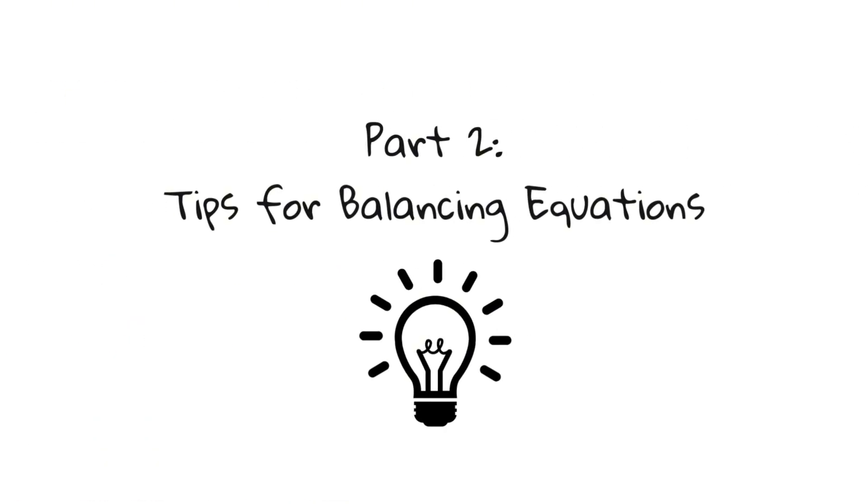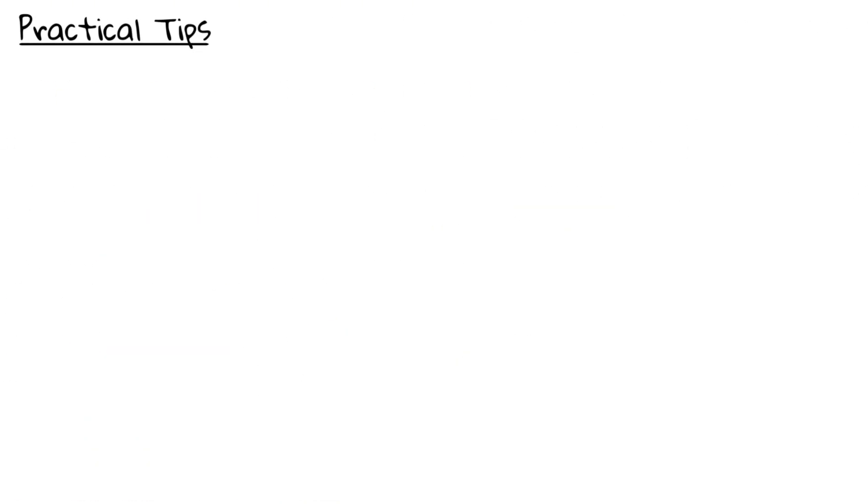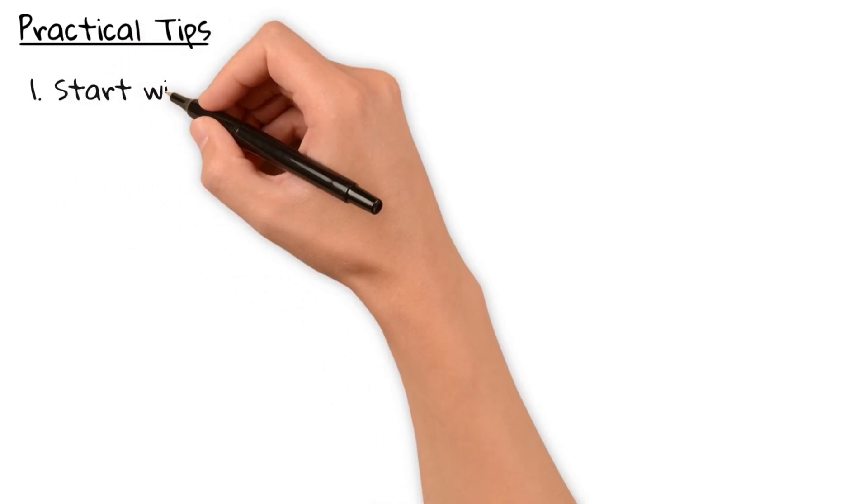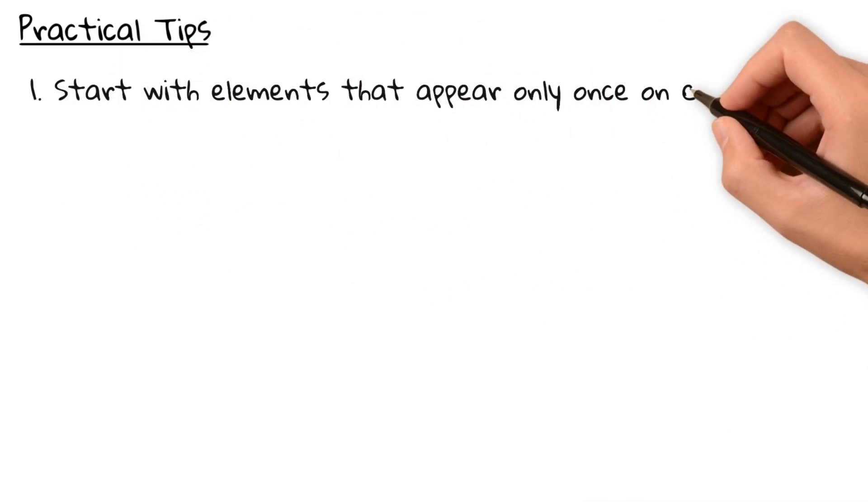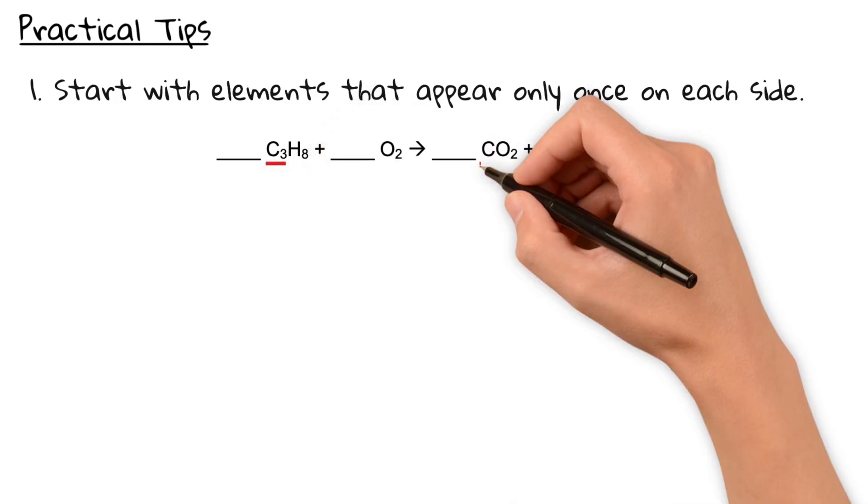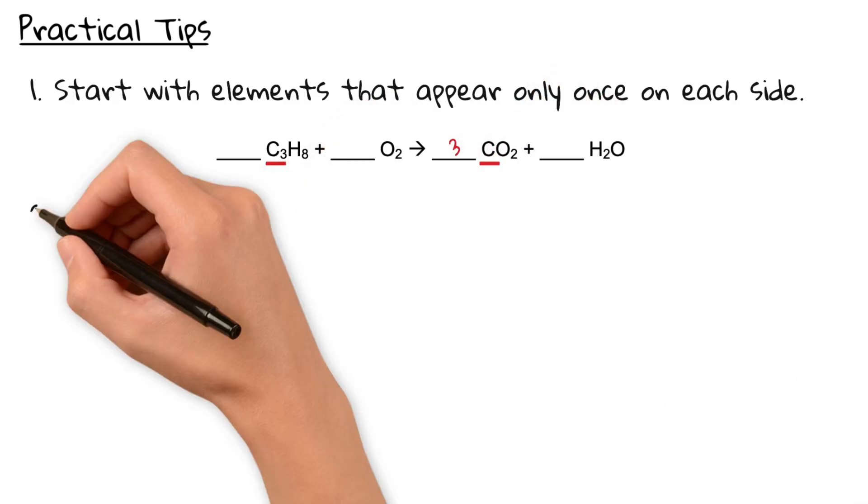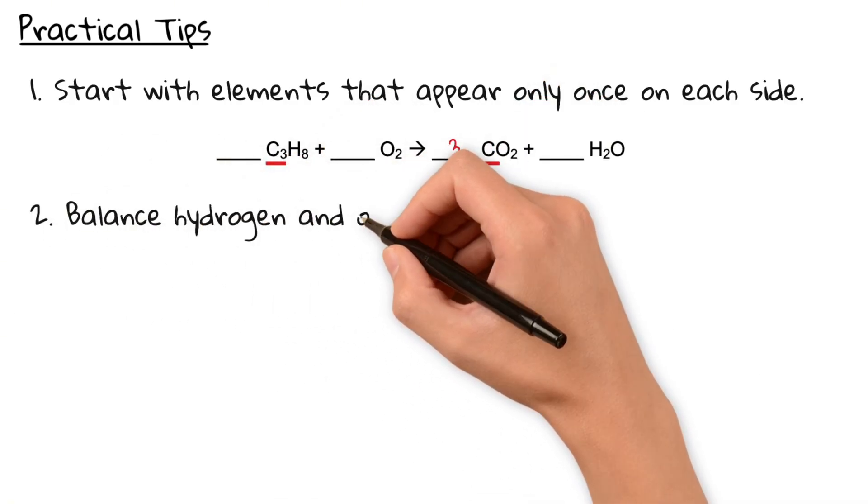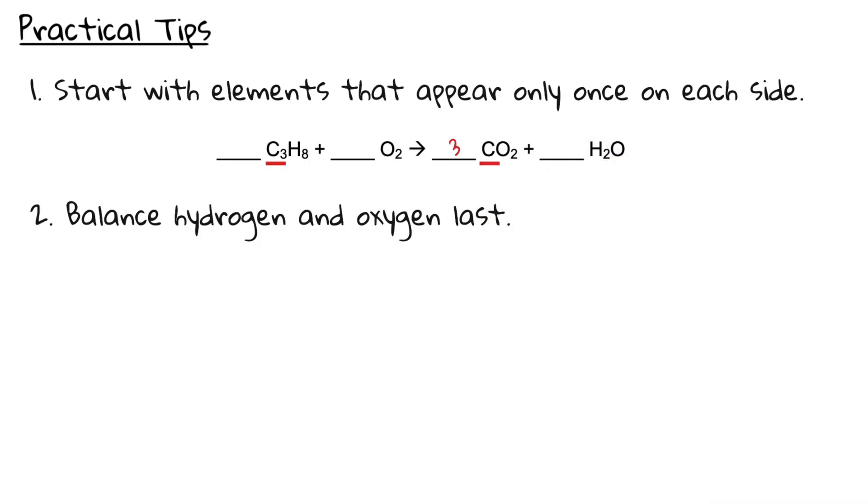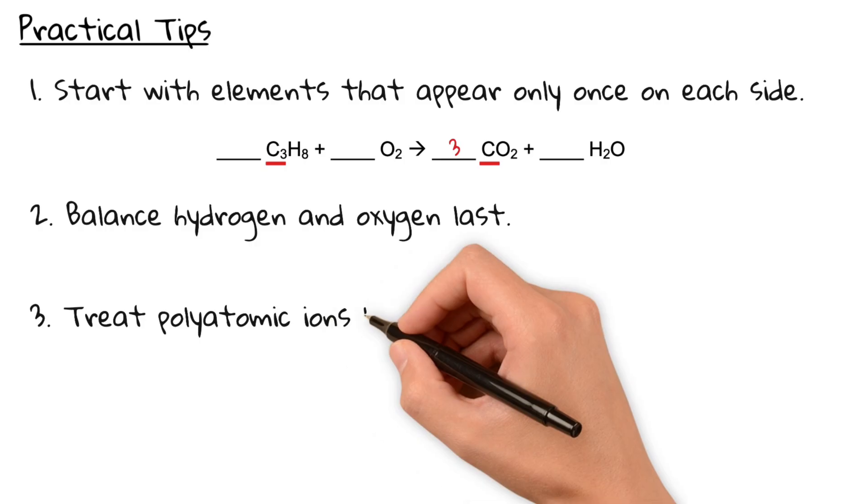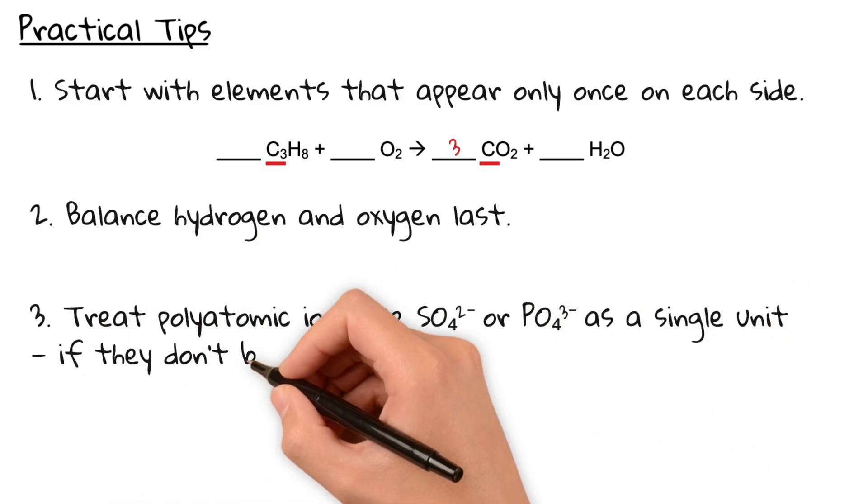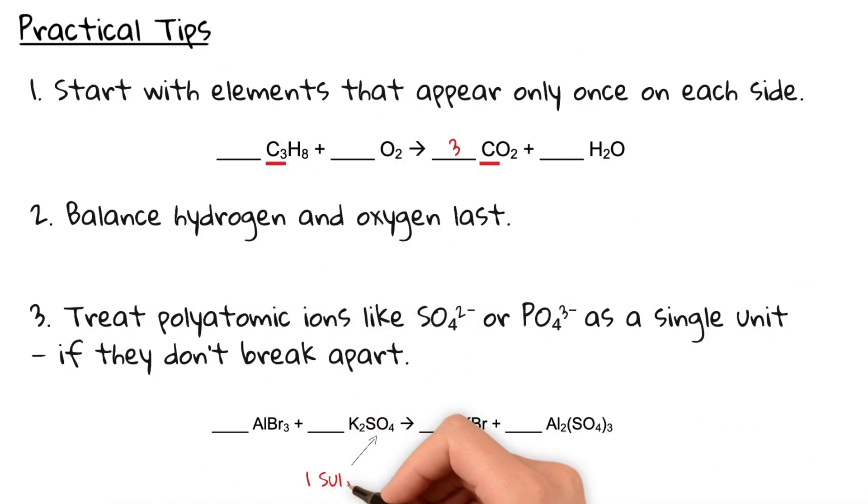Before we dive into our main example, here are three tips to make balancing easier. Firstly, start with elements that appear only once on each side and take it from there. Secondly, balance hydrogen and oxygen last. They're usually involved in multiple compounds and can cause confusion. And lastly, treat polyatomic ions like sulfate and phosphate as single units. This can save a lot of time.